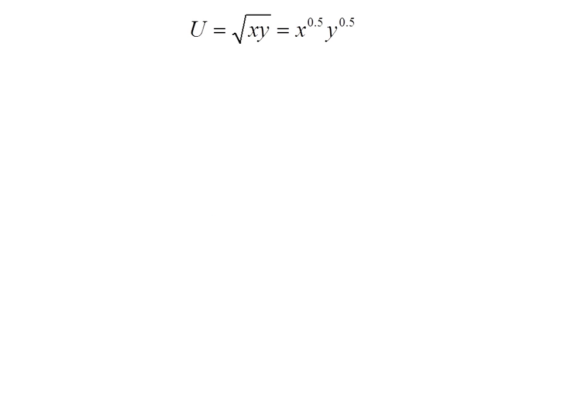So the marginal utilities, we're going to have to take the partial derivative of utility with respect to x and the partial derivative of utility with respect to y. But here since we've got the square root of x times y, I've rewritten utility in exponential form. So here's our notation.